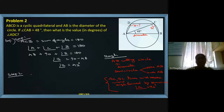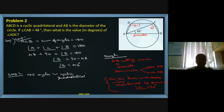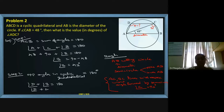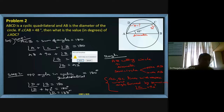Step two: using opposite angles in a cyclic quadrilateral, angle D plus angle B equals 180 degrees. Angle B is 42°, so angle D equals 180 minus 42, which is 138 degrees. Angle D equals 138 degrees. This is the solution to the second problem.